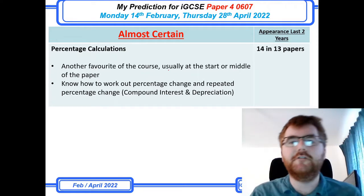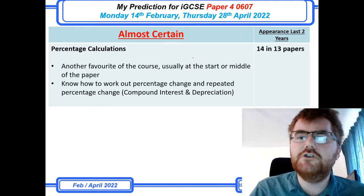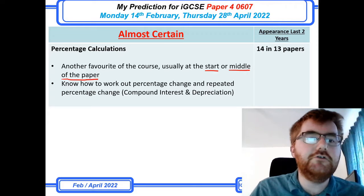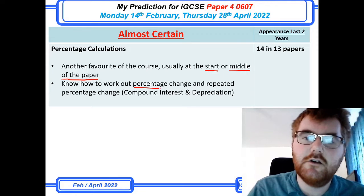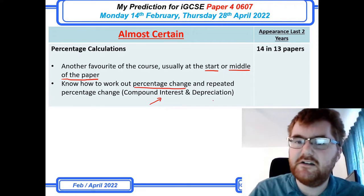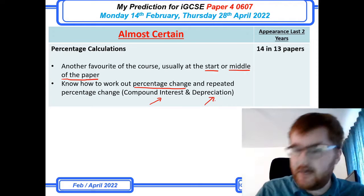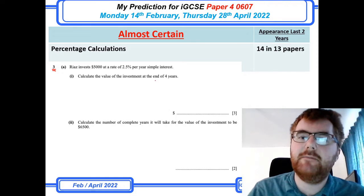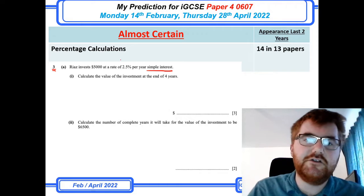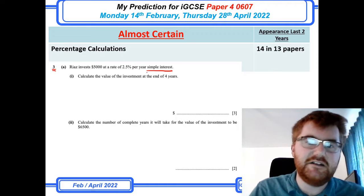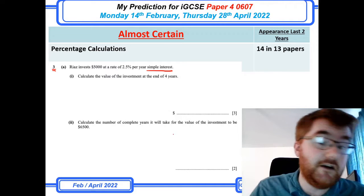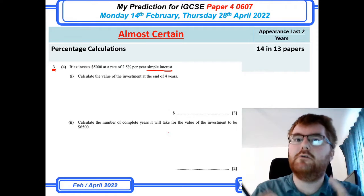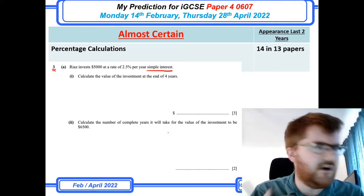Percentage calculations are a favourite of the course, and also of the 0580 course. These are usually at the start or middle of the paper — not the trickiest questions. But you do need to know how to work out percentage change and repeated percentage change, including compound interest and depreciation. A very typical question, like question 3, asks you to work out simple interest — for example, 2.5% of 5,000 times by 4 — or working backwards through similar problems involving compound interest and depreciation.